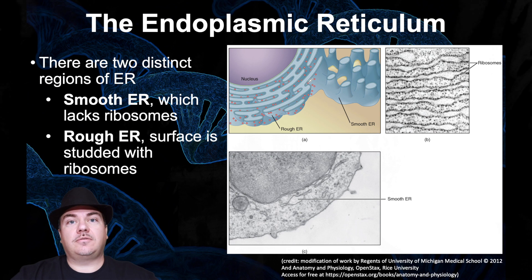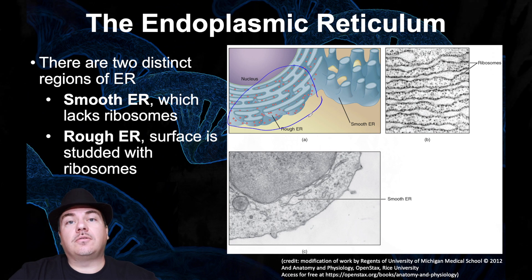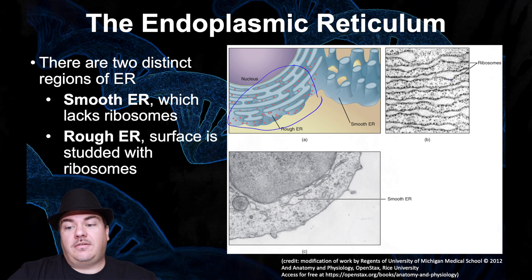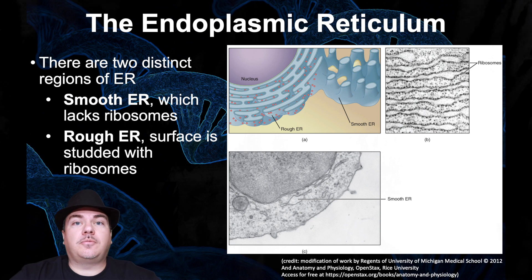There are two types of ER: rough ER and smooth ER. Rough ER is called rough ER because if you look at it, it looks rough — because there are all these little dots on it. Those are ribosomes. There's a bunch of ribosomes stuck on the rough ER. If you look at an electron microscope image of the rough ER, it's these little flattened sacks, and all the little black dots on that are ribosomes. So that's why it's called rough ER — it looks rough because it has ribosomes attached to it.